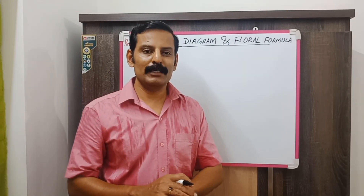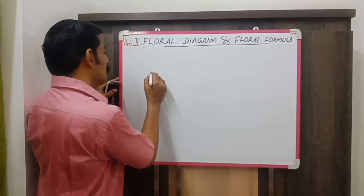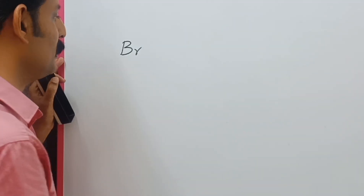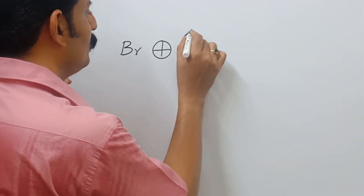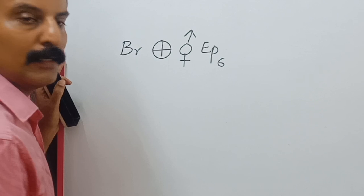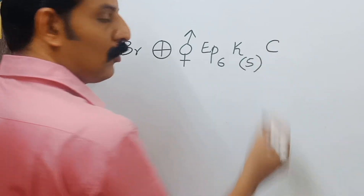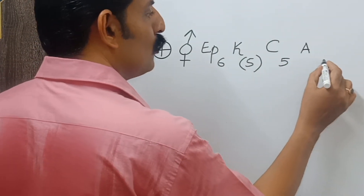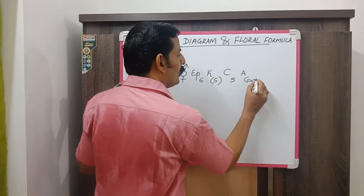Now we can write the floral formula of Hibiscus flower, which we discussed in the last class for the floral diagram. It is a bracteate flower, represented using the letters Br. It is an actinomorphic flower, and it is a bisexual flower. It is having an epicalyx of 6. It is having a calyx of 5, and they are united. It is having a corolla of 5 petals. It is having androecium that is numerous, and the androecium is in monadelphous condition — united — so you give brackets.